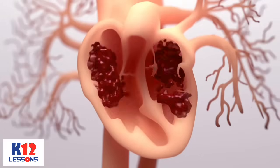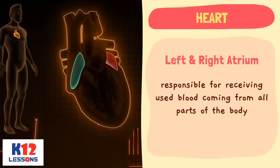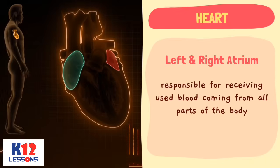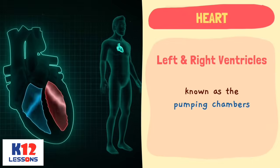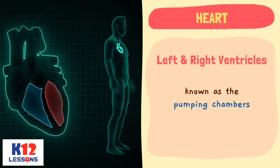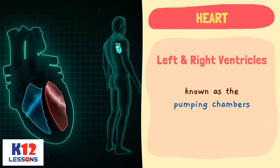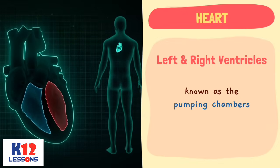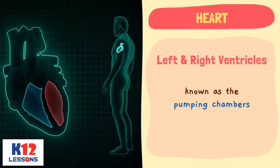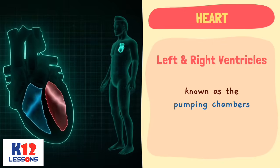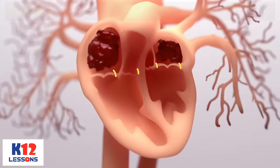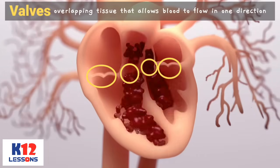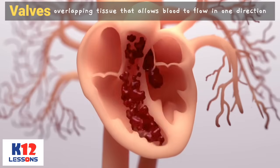The heart has four chambers. The left and right atrium are responsible for receiving used blood coming from all parts of the body, and the left and right ventricles are known as the pumping chambers. When the ventricle contracts, oxygen-rich blood is forced away from the heart for distribution to the different parts of the body. Between the atria and ventricles are valves — overlapping tissue that allows blood to flow in one direction.